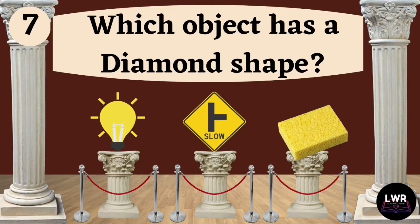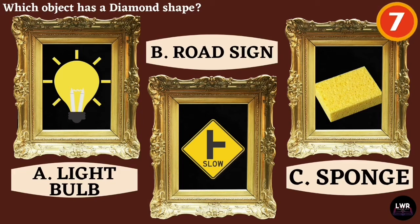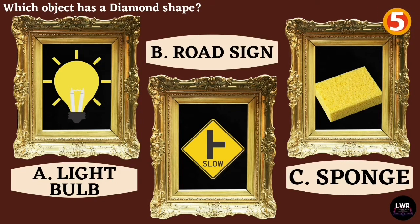Question number seven. Which object has a diamond shape? Letter A, light bulb. Letter B, road sign. Or letter C, sponge.